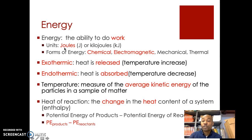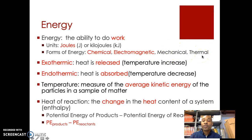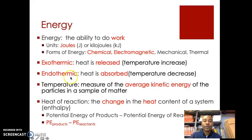We need to define a couple of terms. Energy is defined as the ability to do work, and we measure it in joules (J) or kilojoules (kJ). There are different forms of energy: chemical, electromagnetic, mechanical, and thermal. In chemistry, we're typically talking about chemical energy — the energy in the bonds. Exothermic means that heat is released in a reaction, so the temperature increases. In an endothermic reaction, heat is absorbed, so the temperature decreases. Temperature itself is a measure of the average kinetic energy of the particles in a sample of matter.